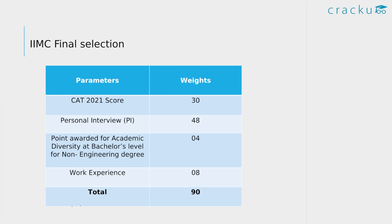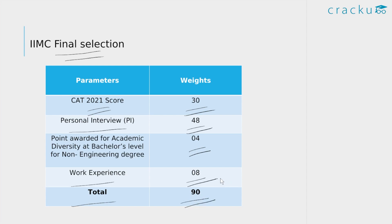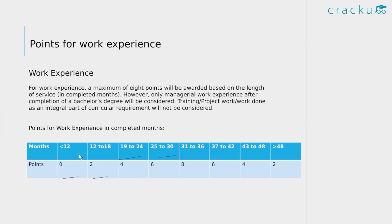For the final selection, your CAT 2021 score is given a weightage of 30, your personal interview is given the highest weightage of 48, academic diversity carries a weightage of 4, and work experience carries 8, adding up to a total of 90. For the work experience breakup: less than 12 months gets 0 points; 12 to 18 months gets 2 points; 19 to 24 months gets 4 points; 25 to 30 months gets 6 points; and up to 36 months (3 years) gets the maximum of 8 points. Once work experience exceeds 3 years, the points awarded keep reducing.